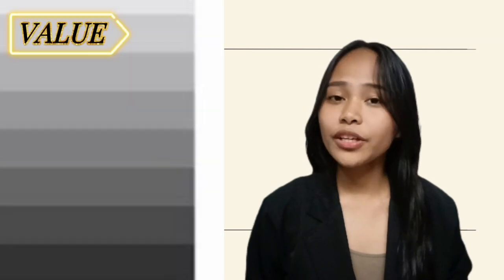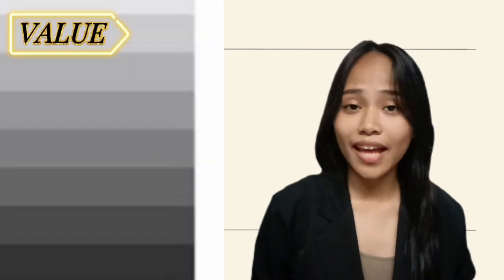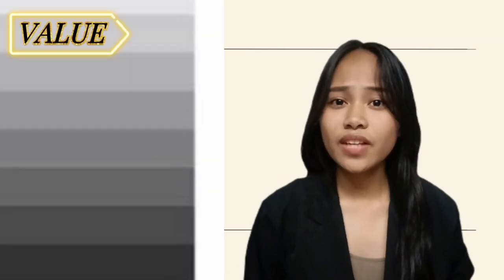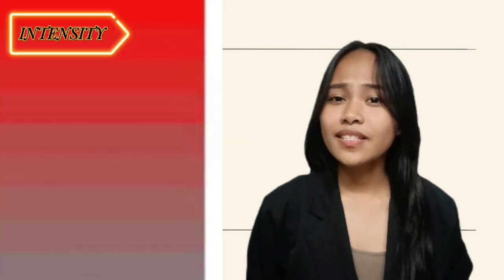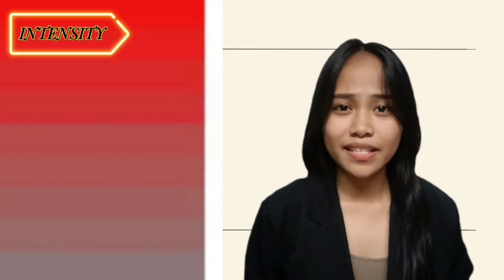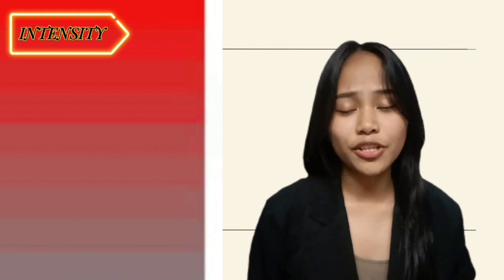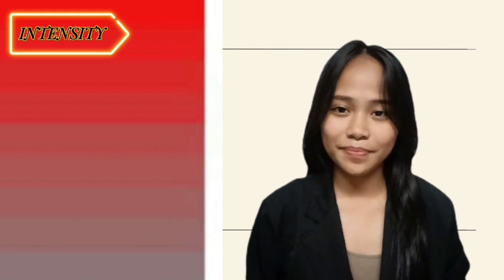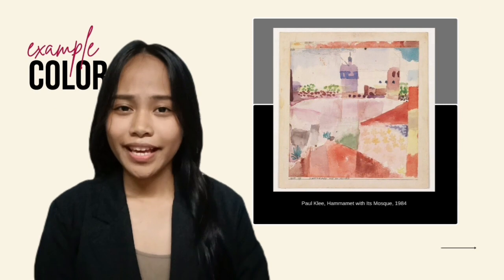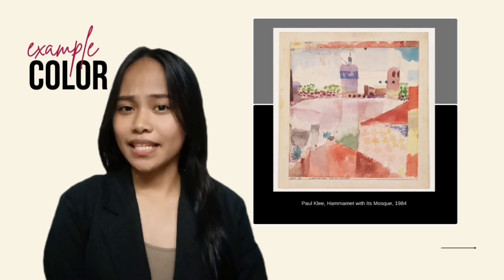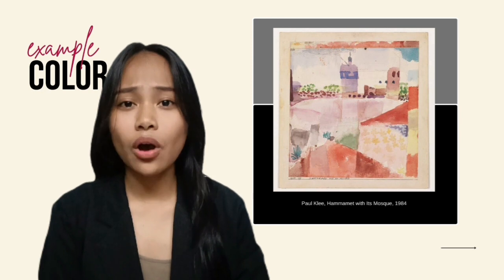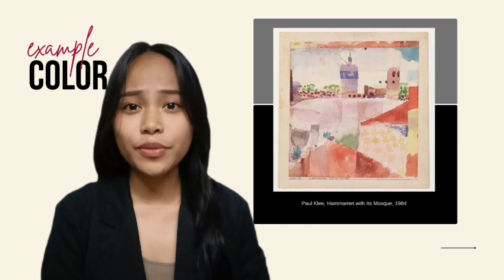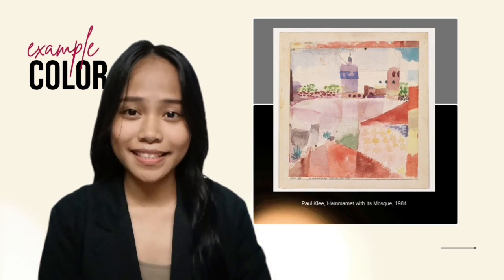Hue is the name of a color. Value is a color's lightness or darkness, which is altered when black or white is added. Intensity refers to the intensity of a color, often measured by boldness or dullness. Let's take an example of Paul Klee's artwork. In his painting, Paul Klee shows contrast between high-intensity and low-intensity colors by using more or less water with his paint.